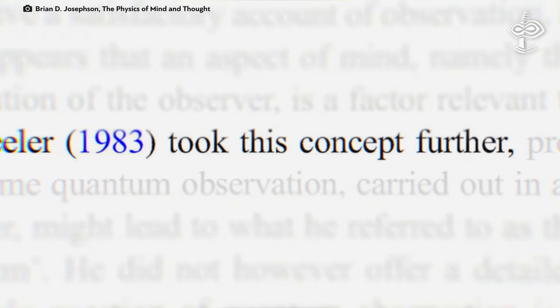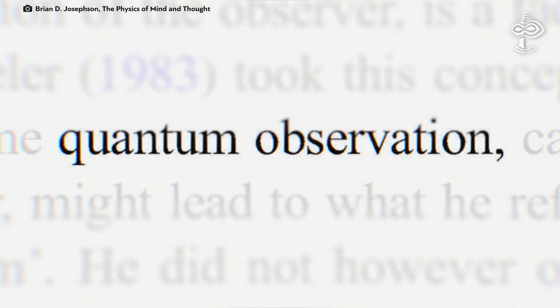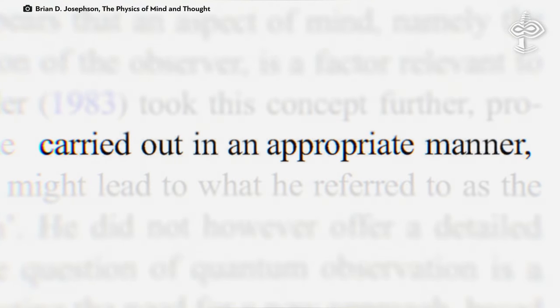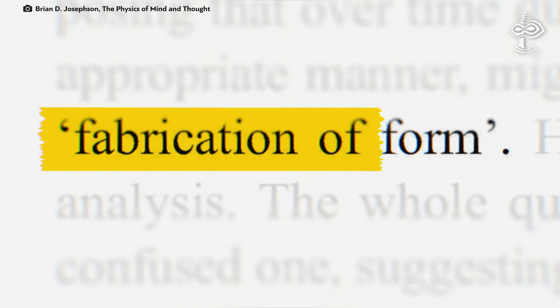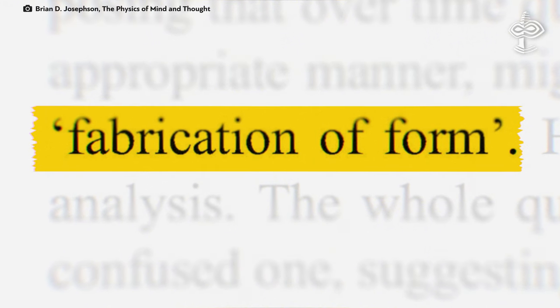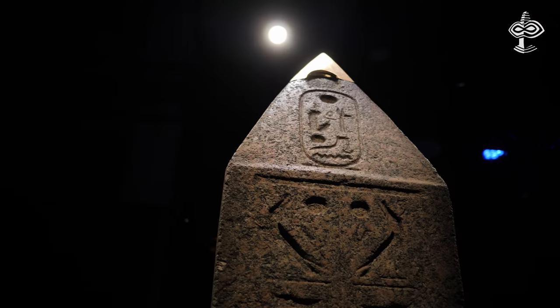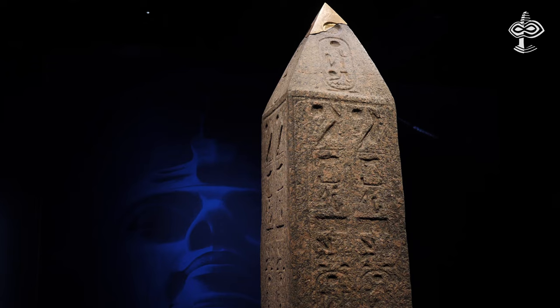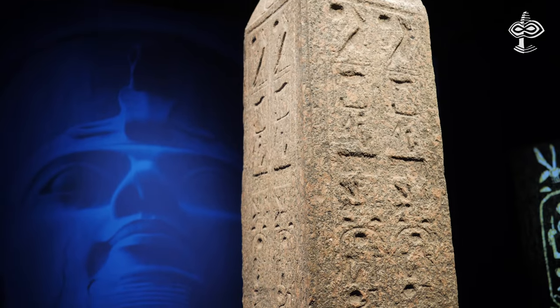Wheeler expanded this idea, suggesting that quantum observation over time, carried out in an appropriate manner, might lead to the fabrication of form, although he did not provide a detailed analysis. And the question remains, could this have already happened in our past?